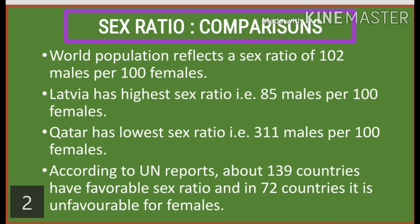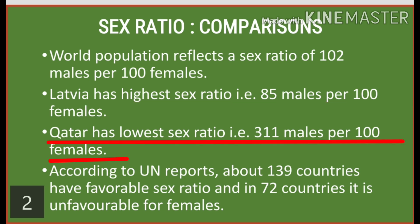Sex ratio and comparisons. World population reflects a sex ratio of 100 males per 100 females. Latvia has the highest sex ratio at 85 males per 100 females. Qatar has the lowest sex ratio at 311 males per 100 females. According to UN reports, about 139 countries have a favorable sex ratio for females, and in 72 countries it is unfavorable for females.